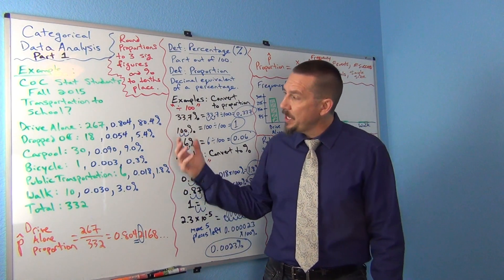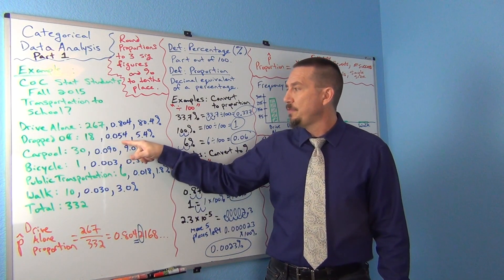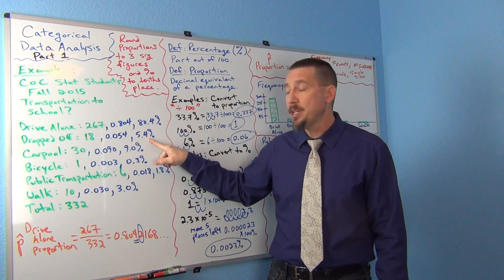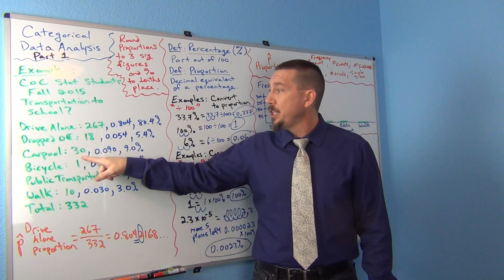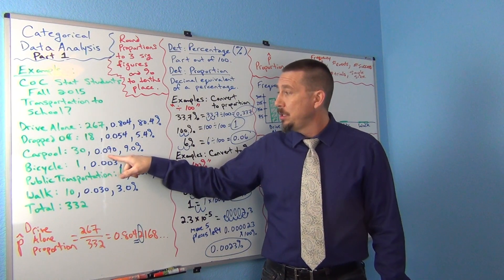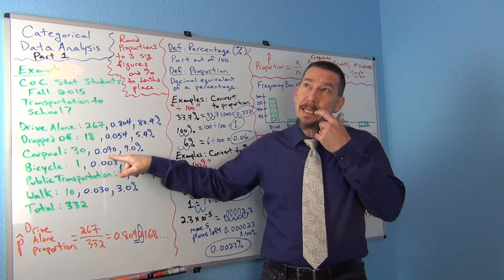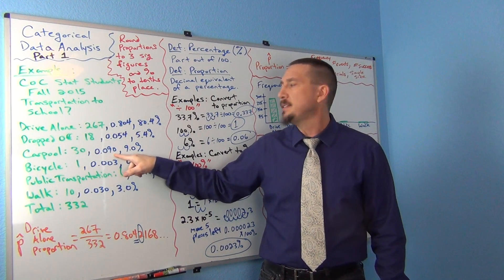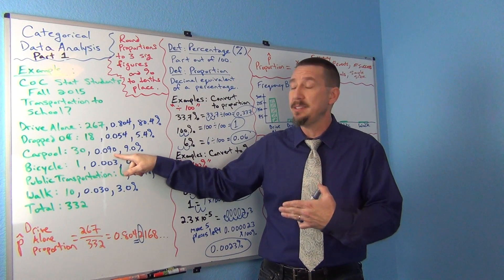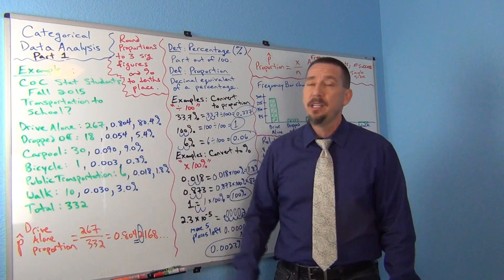And I did the same thing for all the others. So 18 divided by 332, and I rounded. I got about 0.054 for dropped off, which was about 5.4% of the stat students were dropped off. 30 divided by 332 is 0.090. So I know what you're thinking. Yes, well isn't that the same as 0.09? Yes, but actually the zero is good to write because that tells us that you rounded to the thousandths place and it just happened to round to zero there. But you did round to the thousandths place. You didn't round it to the hundredths place.